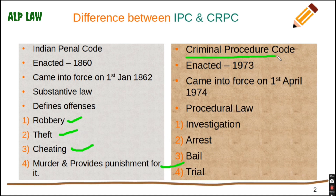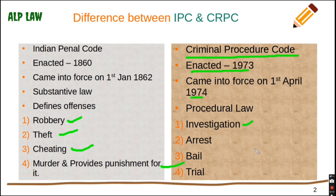CRPC — its full form is Criminal Procedural Code. It was enacted in 1973, which came in force on April 1, 1974. CRPC is a procedural law which works to implement IPC. It deals with how offenses will be handled — such as arrest and trial.